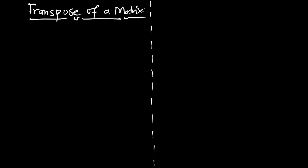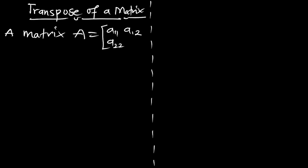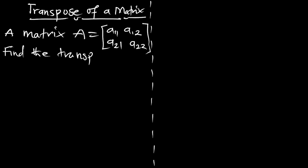Hello, welcome to Einstein Mechanics. Today we are going to look at the transpose of a matrix. Assuming we are given a matrix of the form A, we are to find the transpose of the matrix. The transpose of a matrix A is denoted by A transpose, or A superscript T.